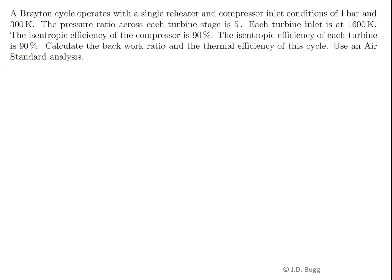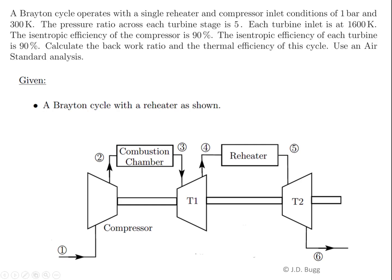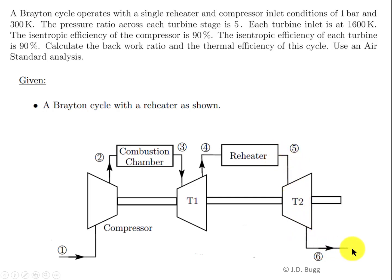We have a Brayton cycle with a single reheater, and there's no mention of any intercoolers or regeneration. A Brayton cycle with a single reheater has a single-stage compressor leading to the combustion chamber, and because there is one reheater there must be two turbine stages. The products of combustion go through the first turbine to some intermediate pressure, the reheater adds additional heat at that pressure, and then they go through the second turbine and exit to atmosphere.